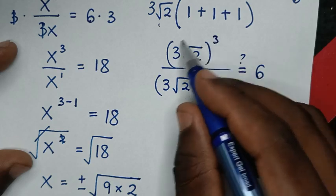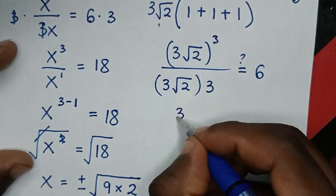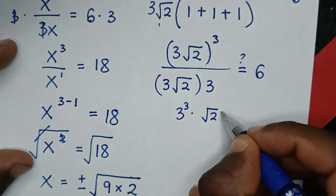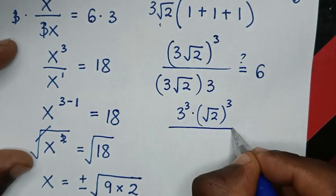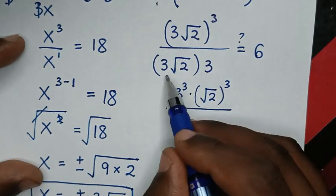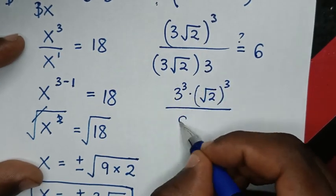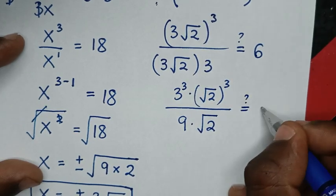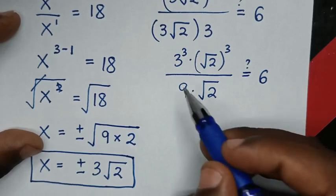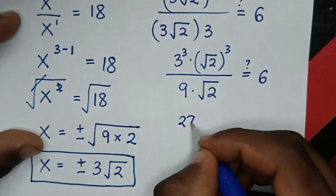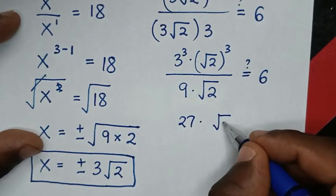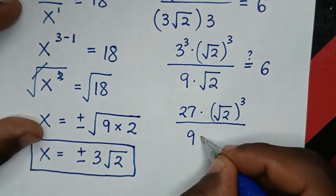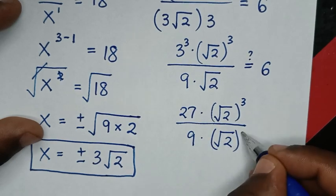We take the power of 3 inside the bracket, so it will be 3 power 3 times square root of 2 bracket to the power 3. Then over 3 times 3, which is 9 times square root of 2. So we have 3 power 3, which is 27, times square root of 2 bracket power 3 over 9 times square root of 2 bracket power 1.